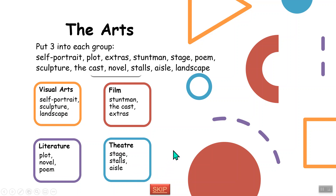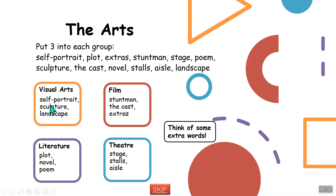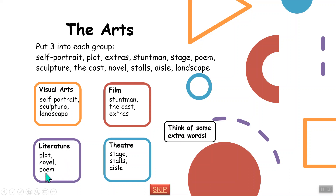I like to have an aisle seat — that's my favorite. Think of some extra words: for visual arts you could add oil painting and watercolor. For film, types could include blockbuster. For literature, you could add genres, or a dictionary, or poetry.